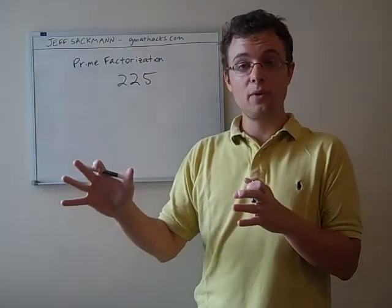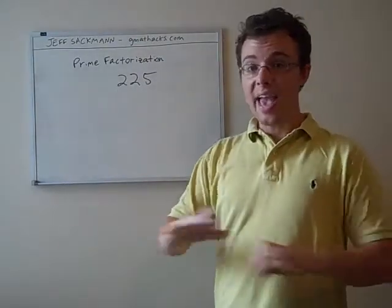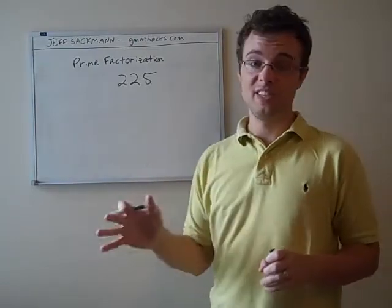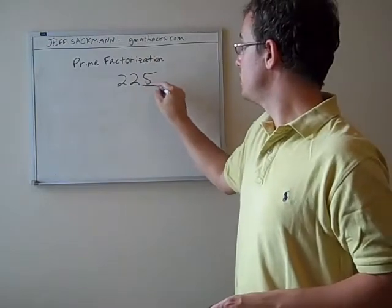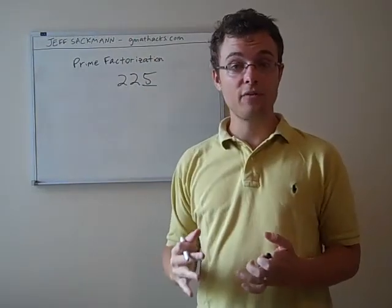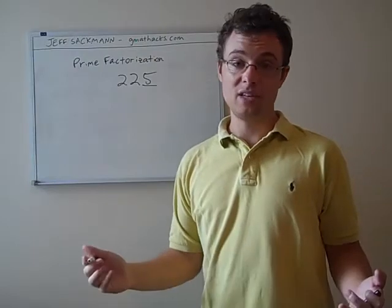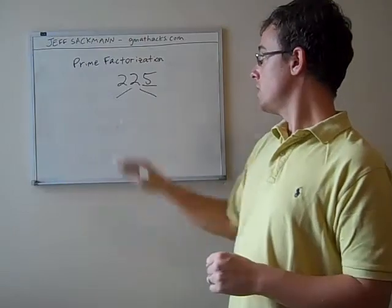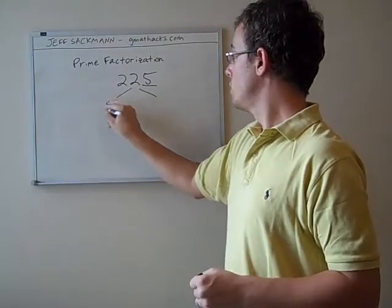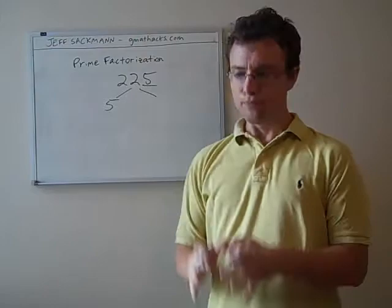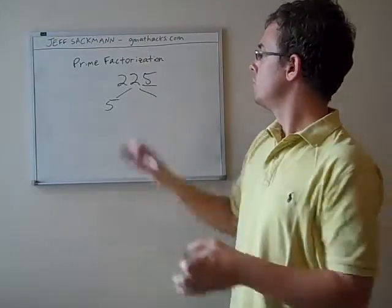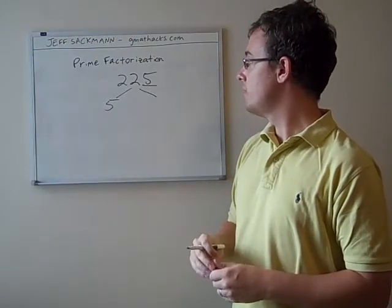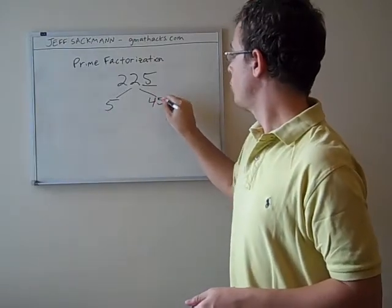The first step is just identify any number that 225 is divisible by. Just looking at 225, we can see the last digit is a 5. Since the last digit is a 5, it's got to be divisible by 5. This is where the tree metaphor comes in—put a couple lines there, we're going to factor out a 5. Just skipping a step here, 225 divided by 5 is 45.